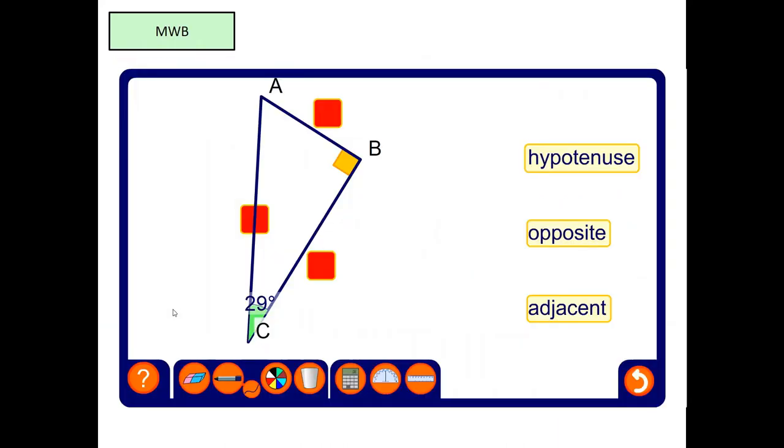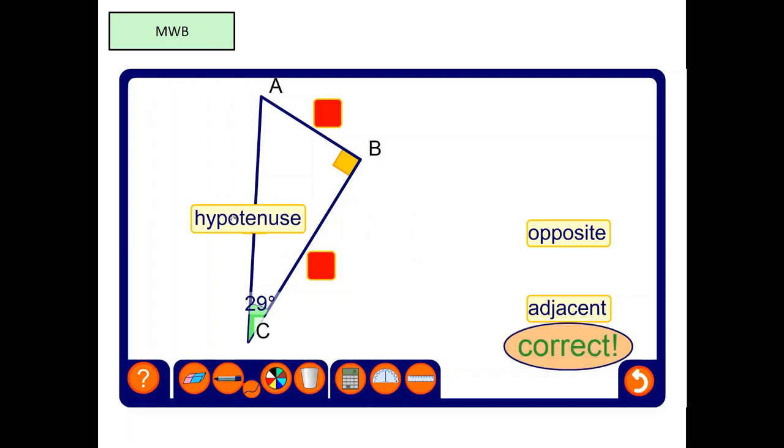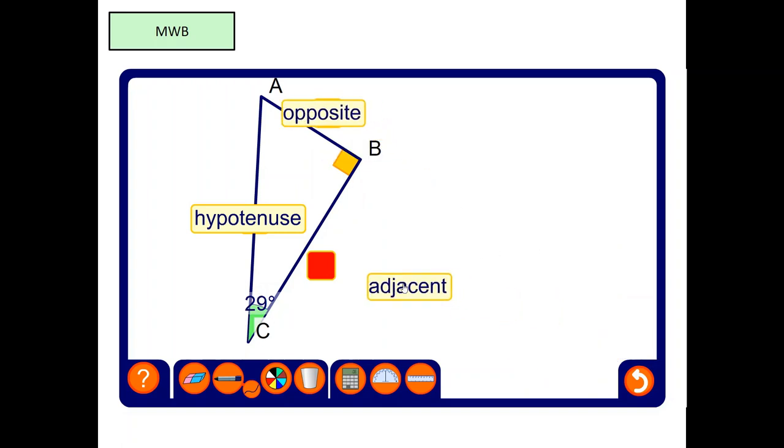Let's have a look at this. First one I need to label up is the hypotenuse, which is opposite the right angle. So, there it goes. Woohoo, it's correct. Right, the next one is the opposite, which is opposite the angle given in the question over here. There we go. And finally, the last side would always be the adjacent.